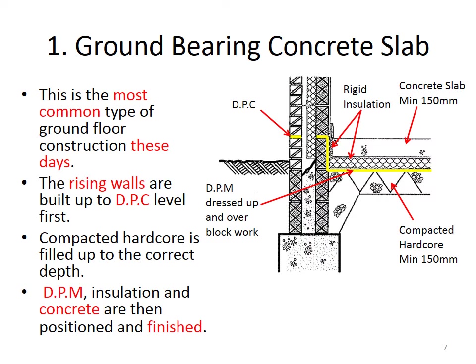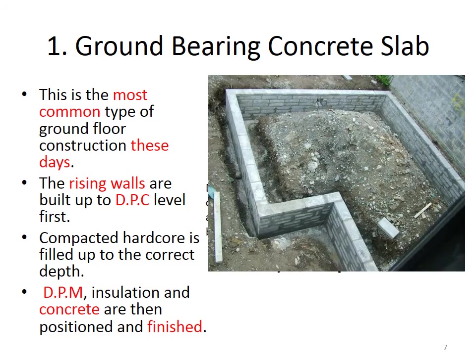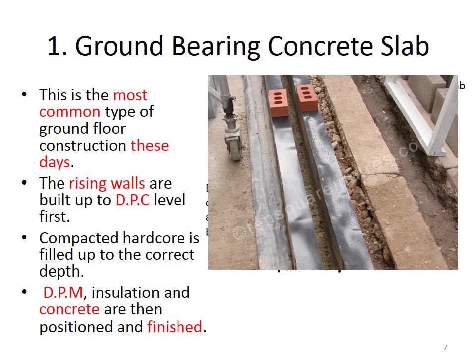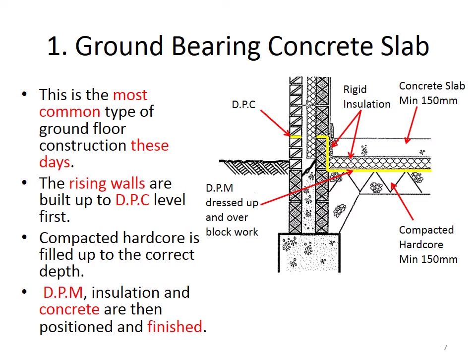Looking at each type in more detail — number one, the ground bearing concrete slab, the most common type of ground floor construction today. First, the rising walls are built up from the top of the foundations to the DPC level, the damp proof course level. The DPC has to be a minimum of 150 millimeters above ground level. The rising walls, also called the foundation walls, are built up to the DPC level.